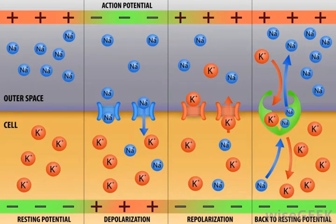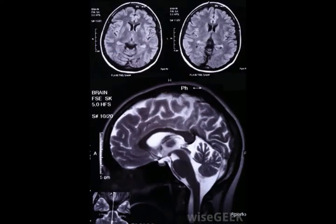The action potential is the result of a large depolarization of the membrane that causes it to reach the threshold. After this occurs, the action potential will be generated and cannot be prevented. This is known as the all-or-none principle: either there is enough depolarization to cause an action potential that will carry through all three phases, or there is not.